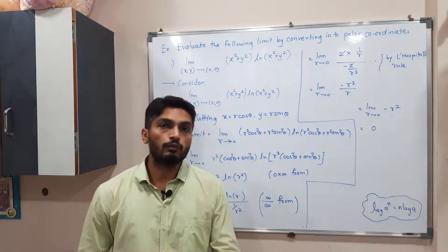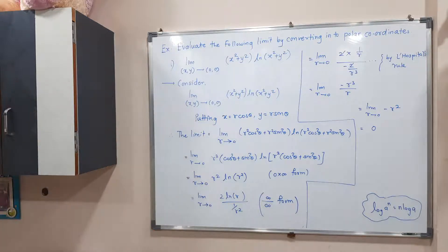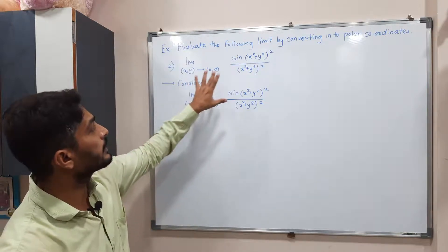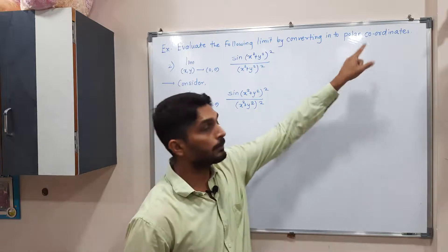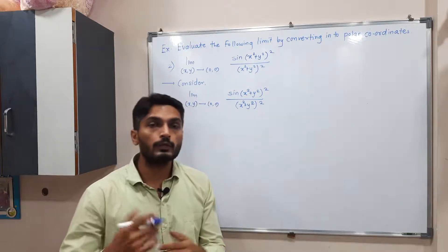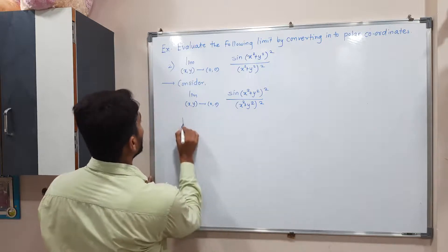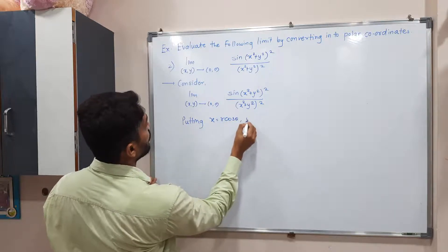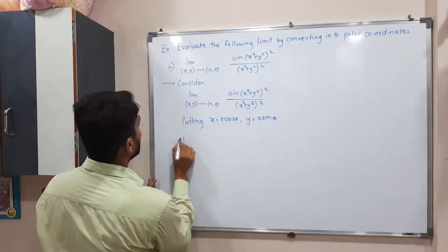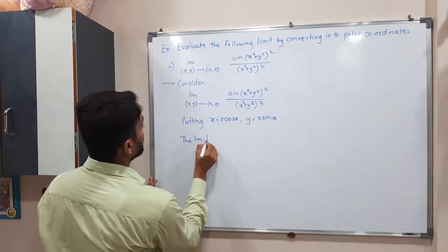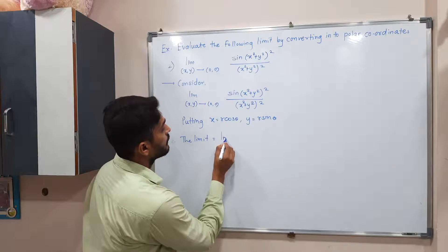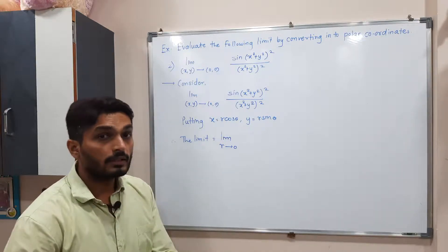Make a screenshot and we will go to the second example. The second example is written on the board, and we have to find the limit again using polar coordinates. We put x equal to r cosθ and y equal to r sinθ. Therefore the limit is written as limit r tends to zero — we never write theta tends to zero.